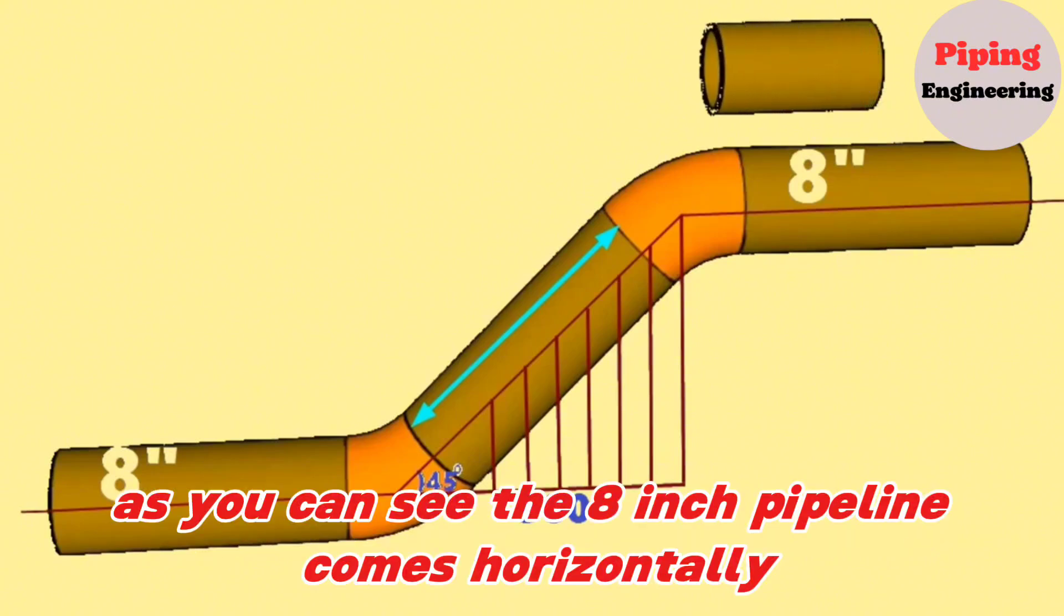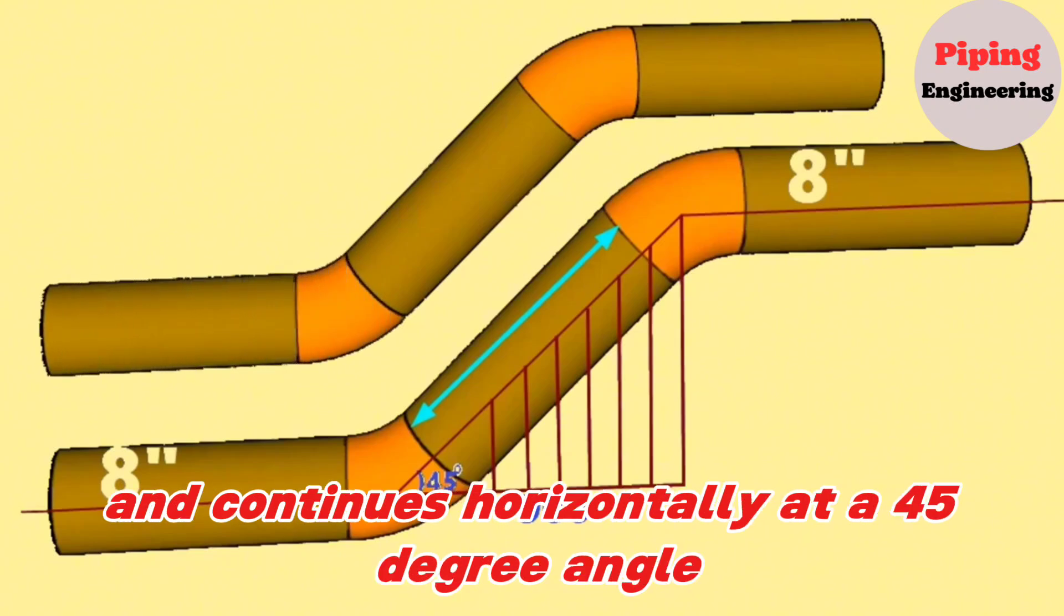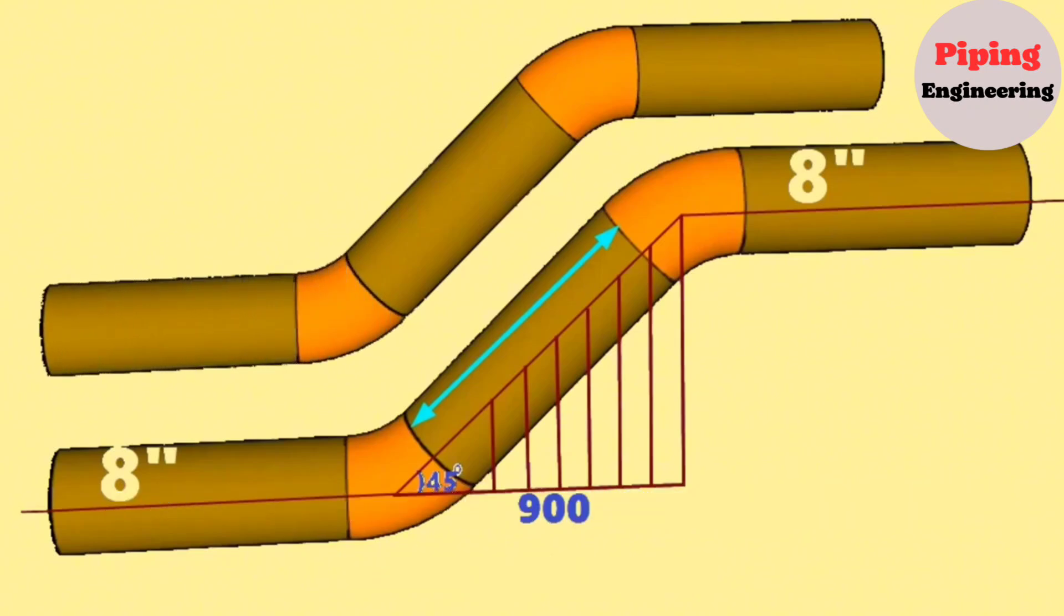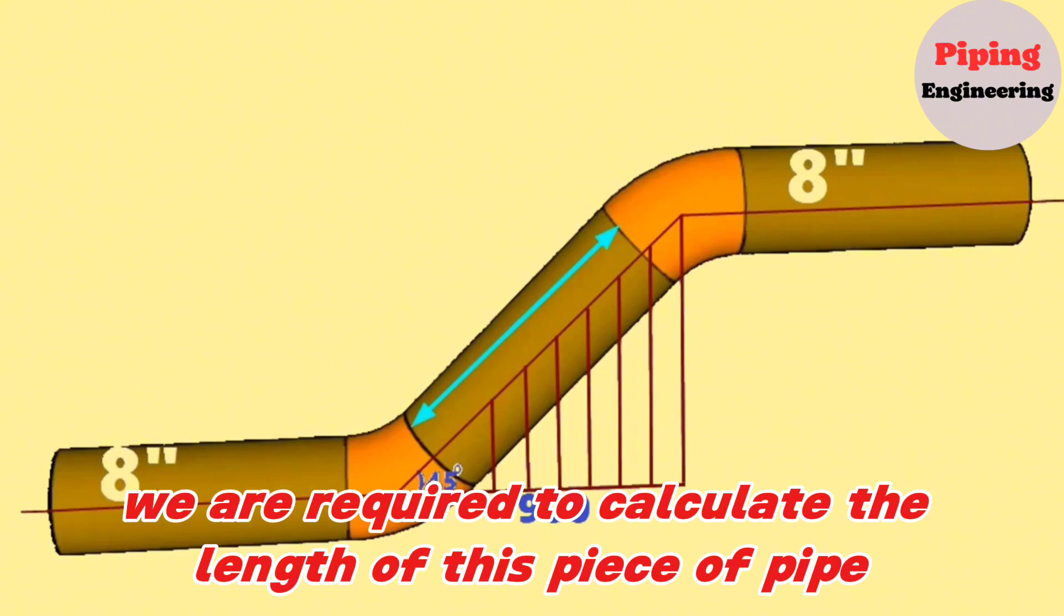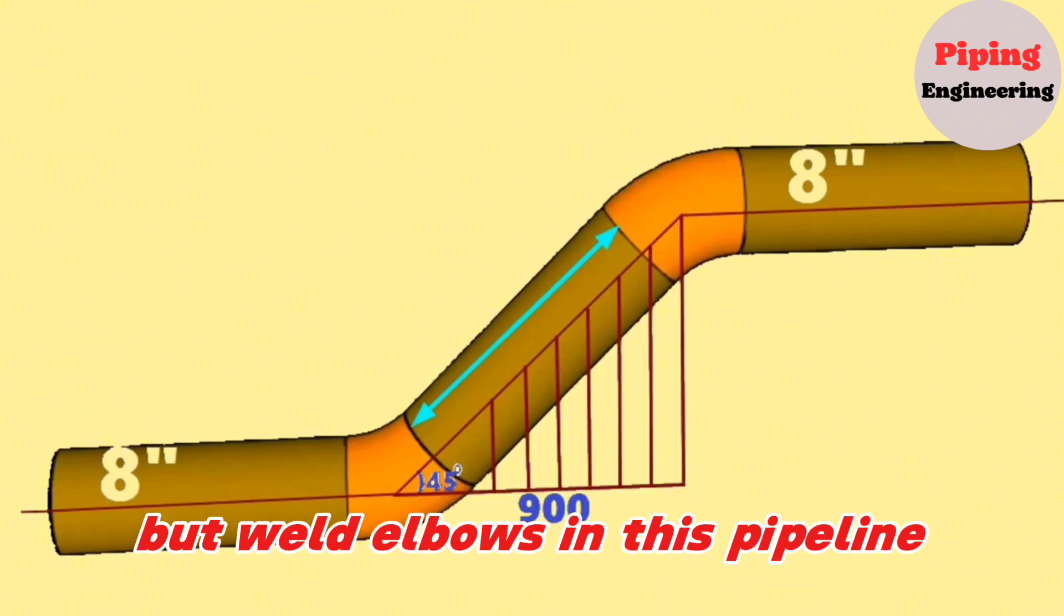Let's start the pipe tutorial video. As you can see, the 8-inch pipeline comes horizontally, then goes down at a 45-degree angle and continues horizontally. We are required to calculate the length of this piece of pipe used between two 45-degree butt weld elbows in this pipeline.